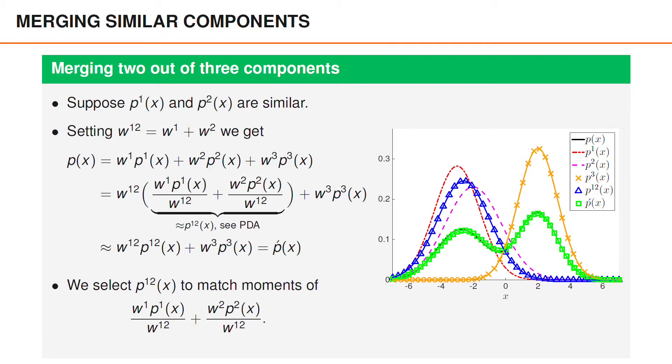The key to obtaining this approximation was to normalize the weights of the components that we wanted to merge, such that they became a PDF. We could then approximate them as a Gaussian density with the same mean and covariance, which can be done using the equations from the PDA filter. Describing a general Gaussian sum filtering algorithm that performs merging is beyond the scope of this video, but I hope that you have at least understood some of the principles and ideas behind merging in this context.